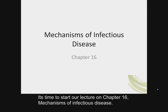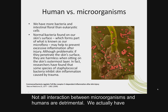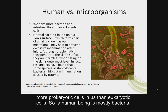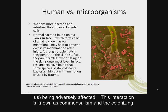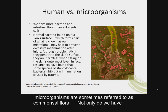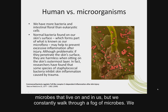Hi class, it's time to start our lecture on Chapter 16, which involves mechanisms of infectious disease. Not all interactions between microorganisms and humans are detrimental. We actually have more prokaryotic cells in us than eukaryotic cells, so a human being is mostly bacteria. These bacteria acquire nutritional needs and shelter without the host being adversely affected. This interaction is known as commensalism, and the colonizing microorganisms are sometimes referred to as commensal flora.